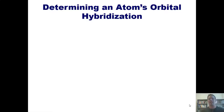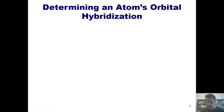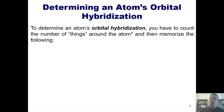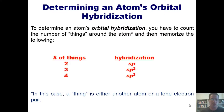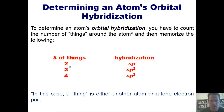For now, I want you to be able to look at any atom in a Lewis structure and tell me what that atom's hybridization is. To determine an atom's orbital hybridization, count the number of things around the atom — either another atom or a lone electron pair. If the atom has two things around it, it is sp. If it has three things around it, it is sp2. If it has four things around it, it is sp3. Let's look at some examples.